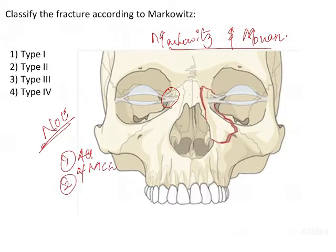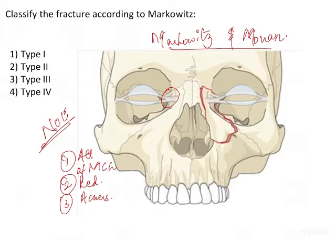The second criterion is whether the fracture fragments can be reduced or not. The third is based on the accessibility of the fracture and the prognosis. Based on these criteria, they classified the fracture into three types: type 1, type 2, and type 3.